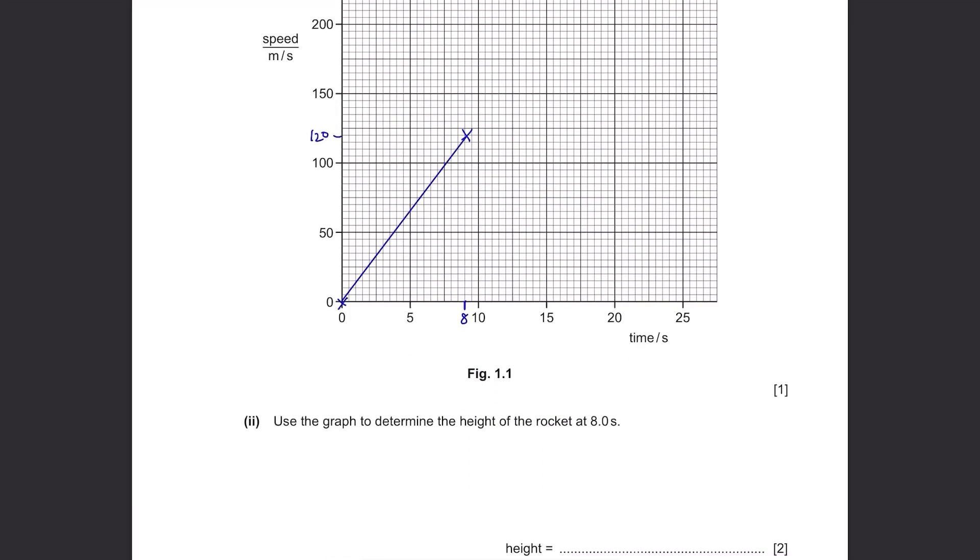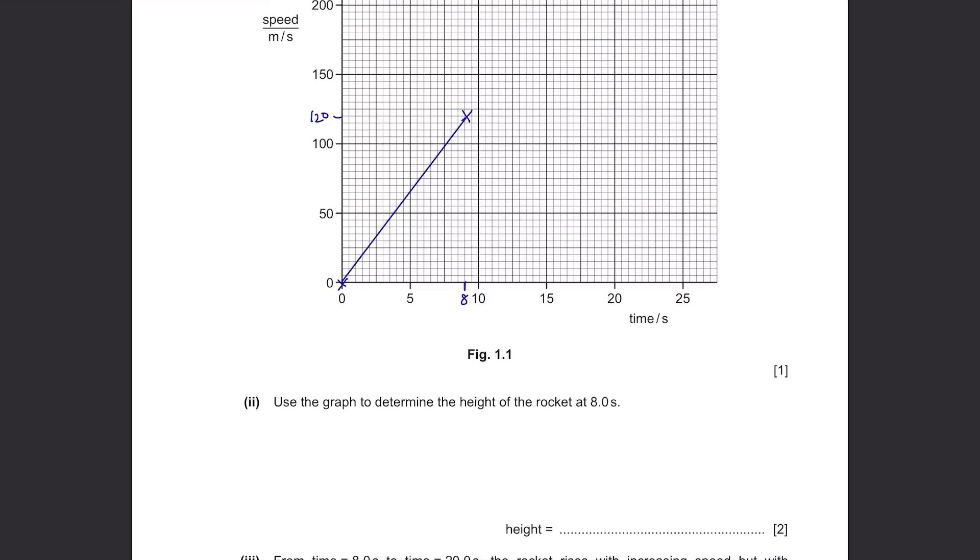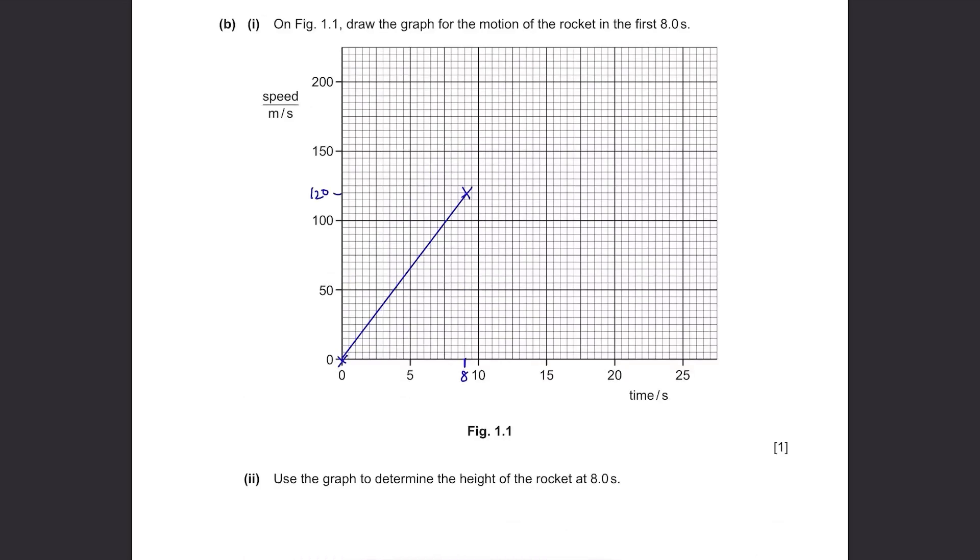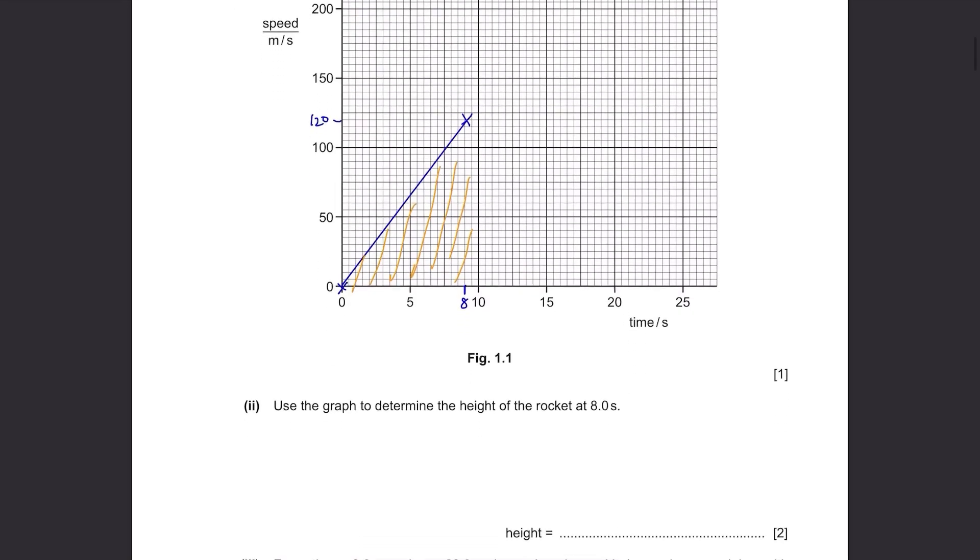Use the graph to determine the height of the rocket at 8 seconds. The height of the rocket basically stands for the distance traveled. To find the distance from a speed-time graph, you need to find the area under the graph. This is a triangle with a base of 8 and height 120, so half times 8 times 120 equals 480 meters.